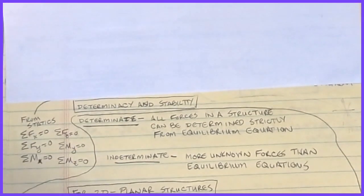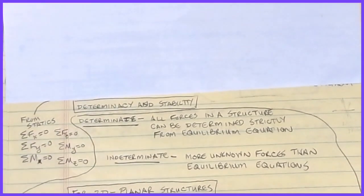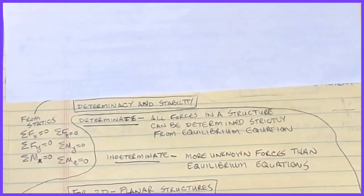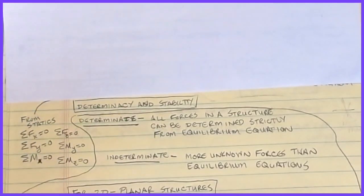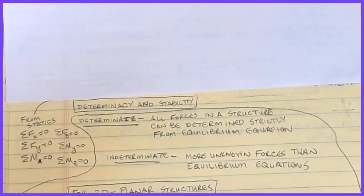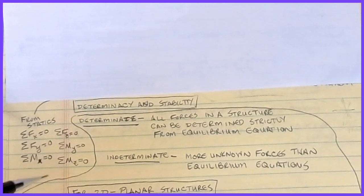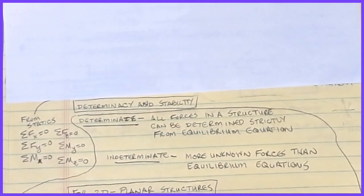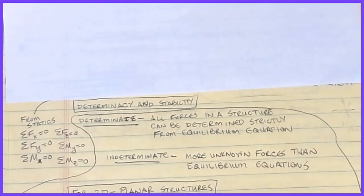If you remember back when we first started this series, and even all the classes you've taken up to this point — whether it's statics or mechanics of materials — at the end of the day everything boiled down to these six equations. For three dimensions it was three force summations: sum in x, sum in y, and sum in z, and three moments: about the x-axis, y-axis, and z-axis. Isaac Newton said that for equilibrium, all of those had to sum to zero. So that gave us six equations.